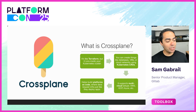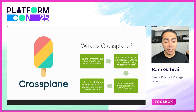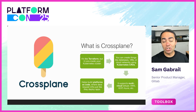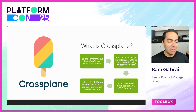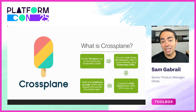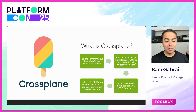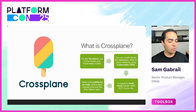Crossplane is another open source project under CNCF. It lets you manage your cloud resources using Kubernetes as a control plane. Similar to Terraform, it's an infrastructure as code tool that helps you build anything in cloud or on-prem. It can create databases, VMs, cloud networks, and it uses Kubernetes CRDs. It supports multi-cloud setups — AWS, GCP, Azure, and even on-prem — and helps build platforms as code where developers can request infrastructure just like they would when deploying applications.